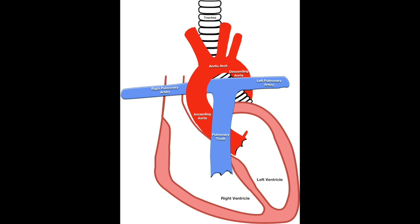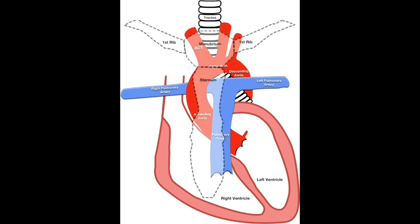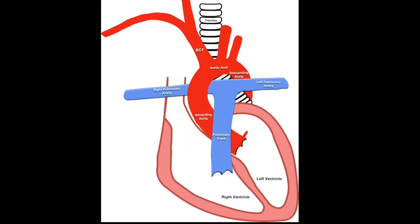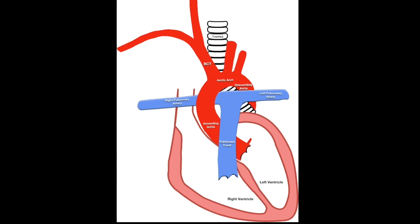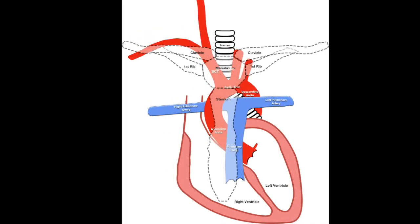The largest and most proximal branch is the brachiocephalic trunk. This arises posterior to the manubrium and ascends about four centimeters superiorly and to the right, crossing in front of the trachea as it does so. It bifurcates into two terminal branches as it reaches the level of the sternal end of the right clavicle: the common carotid artery which travels superiorly into the neck and the right subclavian artery which travels laterally towards the right upper limb.